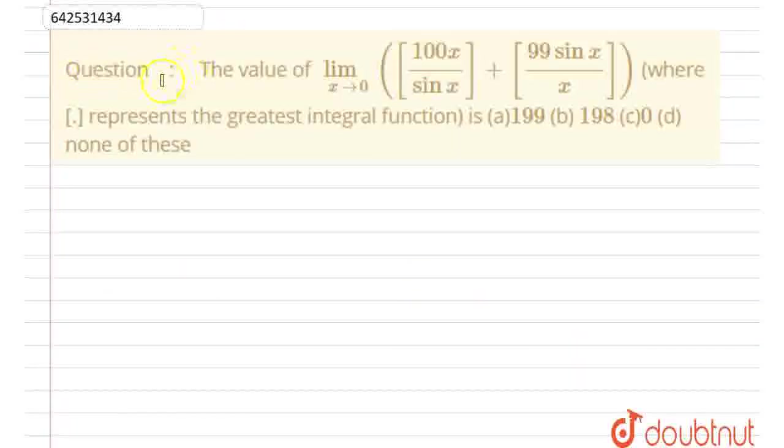Hello everyone, let's start this question. This question says the value of limit x goes to 0. Within bracket, we have 100x by sinx, box of it, plus 99 sinx by x, box of it, where box represents the greatest integer function.